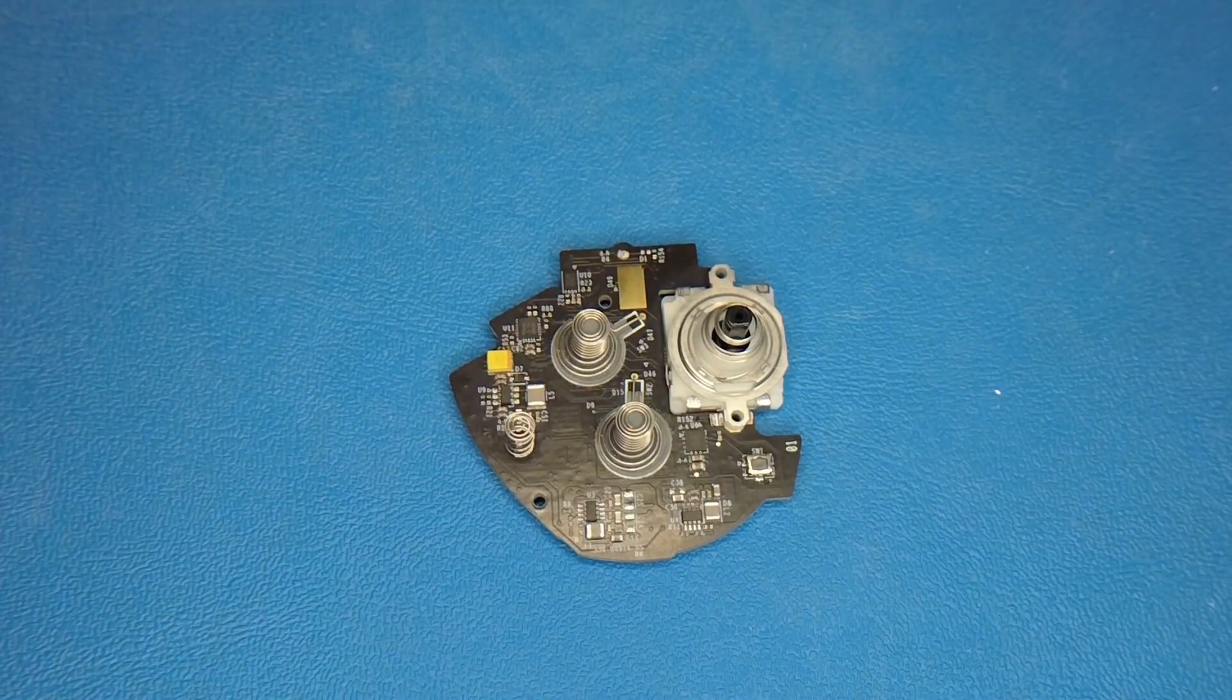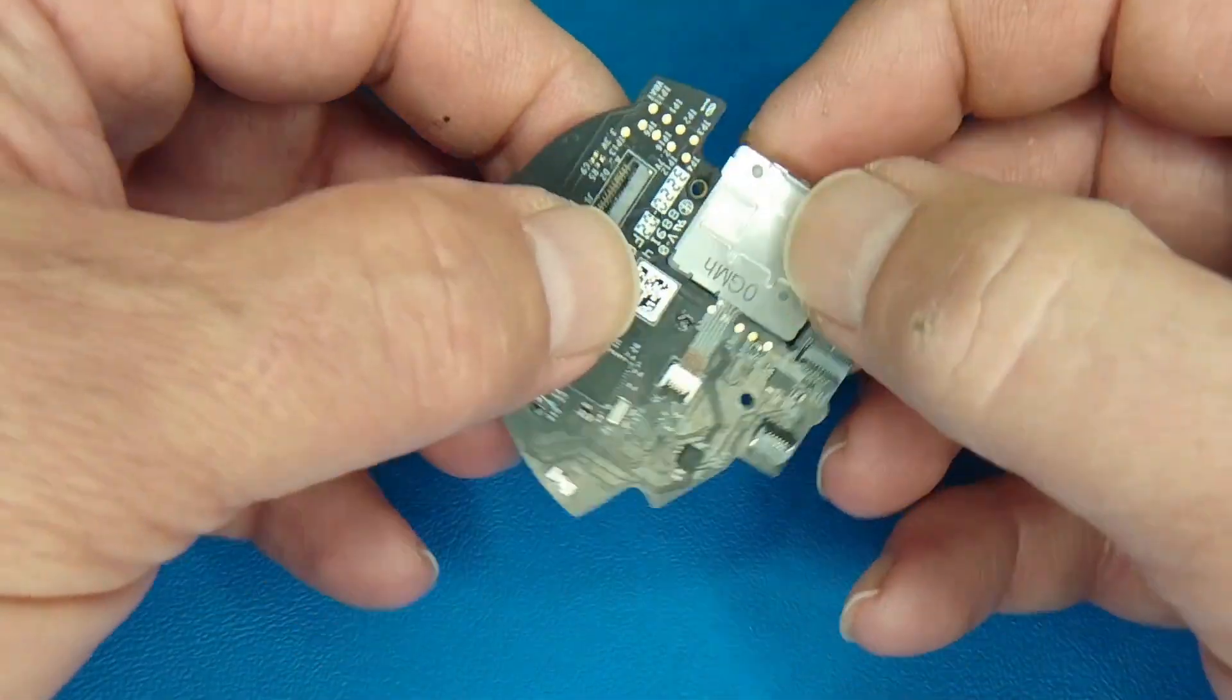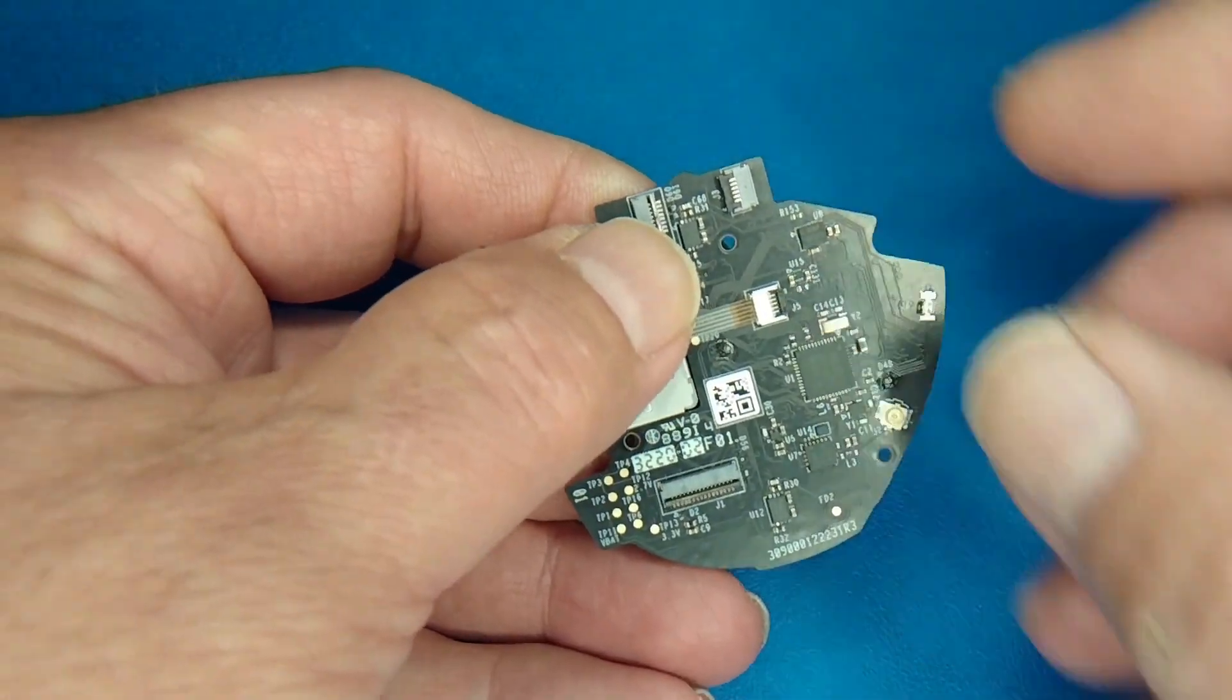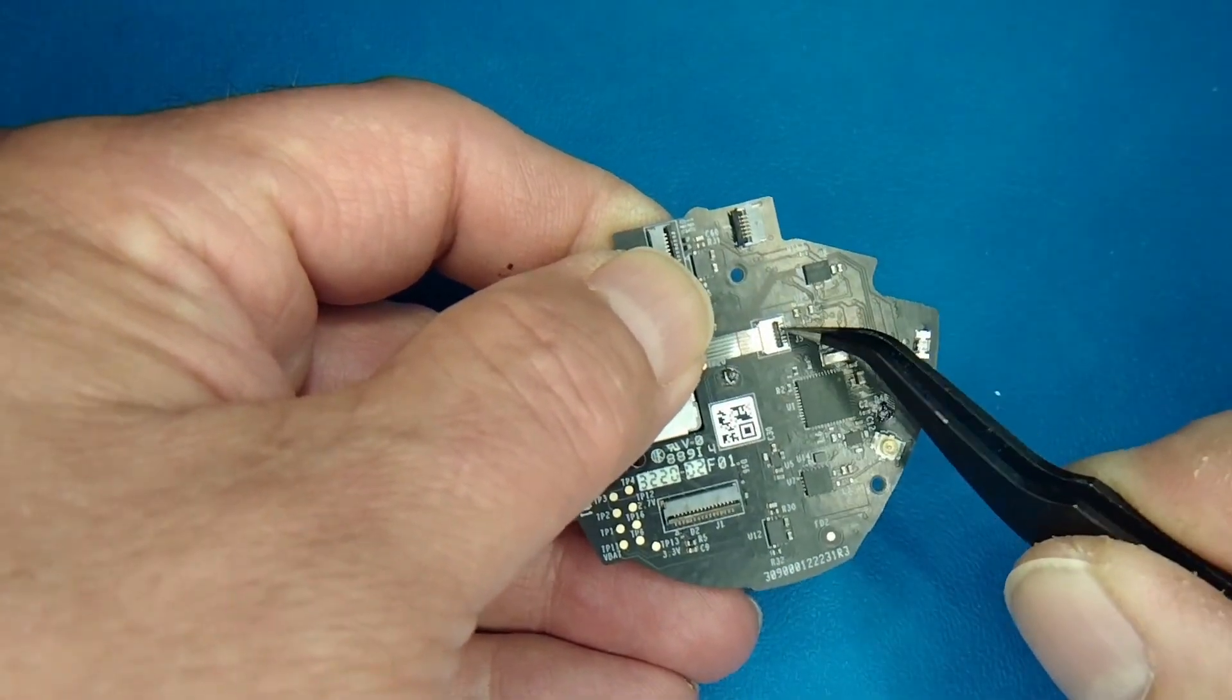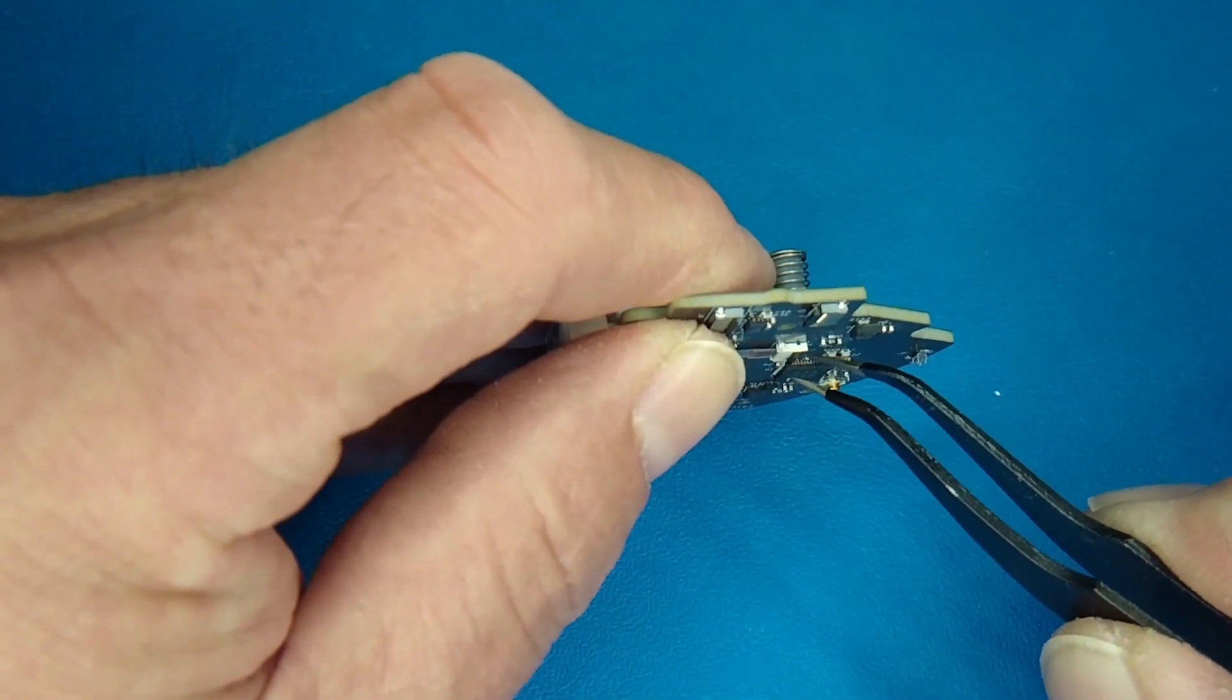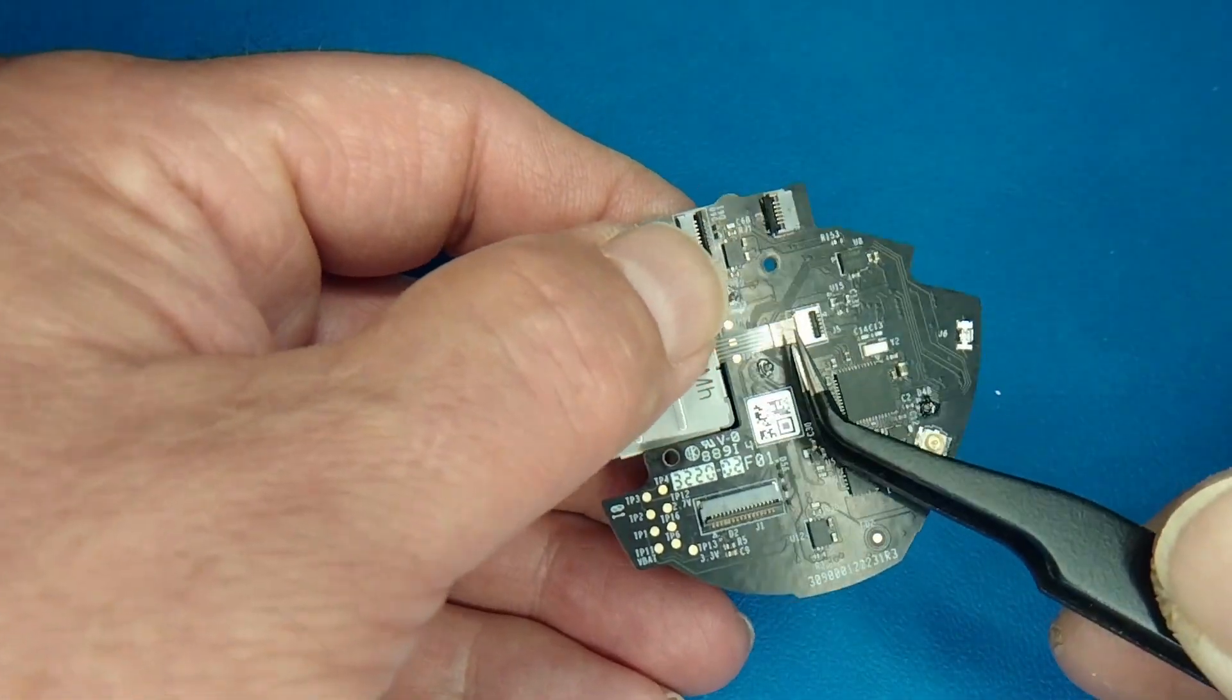You've removed the circuit card with the transducer attached. That's the white bit with a little joystick on it. We're going to flip up that little latch on the back that holds the ribbon cable, the little flex cable. Once it's up, just give a little tug and it should come right out of there.